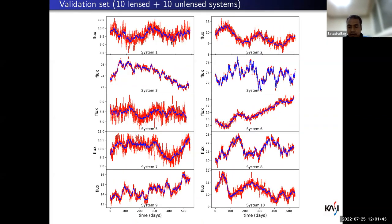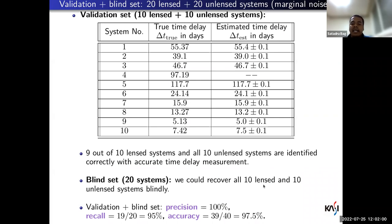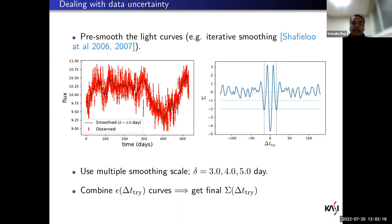Since we applied the method on high-quality data with marginal noise, our time delay estimations are spot on — for all nine systems we estimate the time delay very accurately. We also tested the method on a blind set having ten lensed and ten unlensed systems and could recover all of them correctly. In combination of the blind and validation sets, precision, purity, recall, and accuracy are all close to 100% — this is for high-quality data with marginal noise.